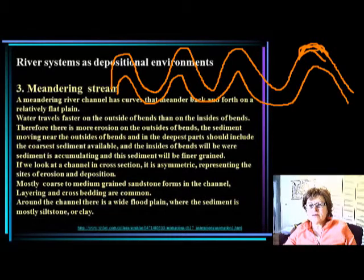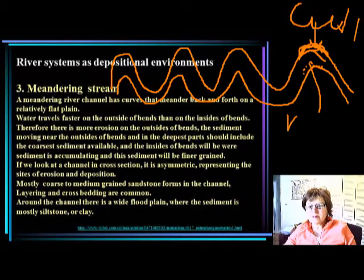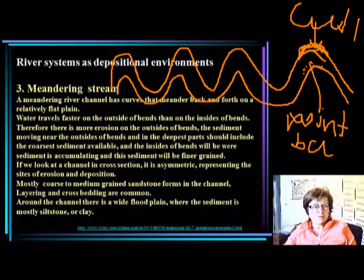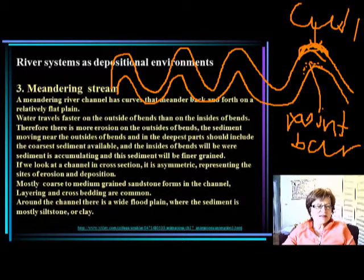Where erosion is happening on one side, deposition happens on the other. We call the eroding part the cut bank, and the depositing side the point bar — we learned about these in physical geology. The water travels faster on the cut bank side and slower on the point bar side, which is why you have deposition on one side and erosion on the other.